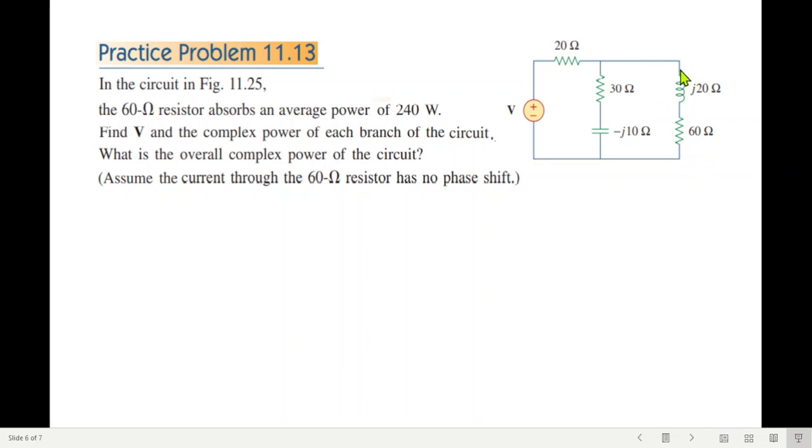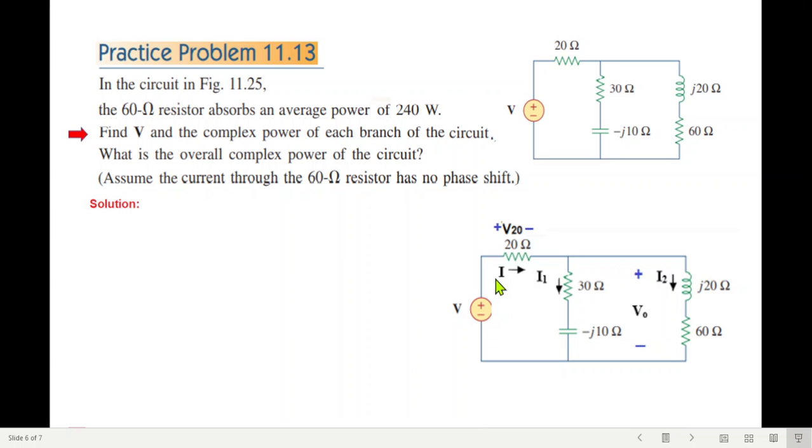Find the total voltage and complex power of each branch of the circuit. We need to find currents I1, I2, and the total current.